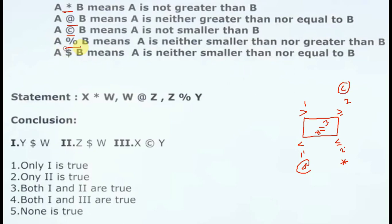Percentage (%) is nothing but greater than or equal to, and dollar ($) is another coded symbol. Now we have a conclusion. Here we have A is greater than B — this is a straight symbol comparison. We assign it a number and check the relationship.